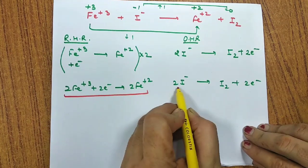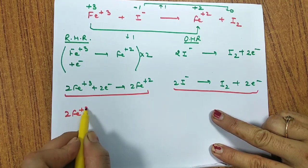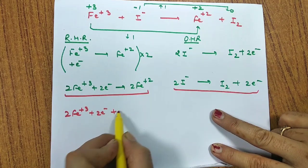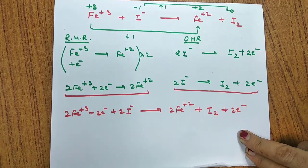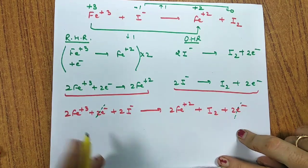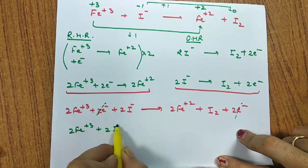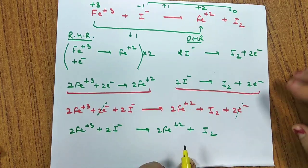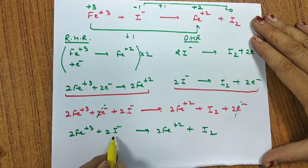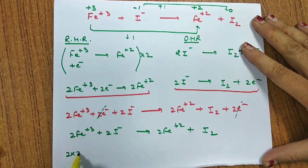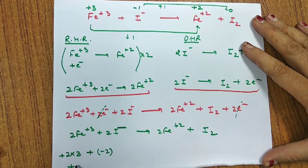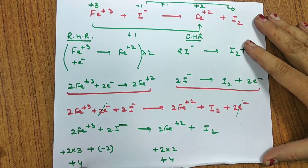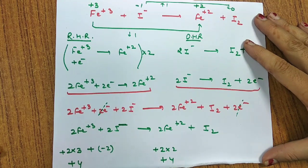Adding the two half reactions together: 2Fe³⁺ + 2e⁻ + 2I⁻ → 2Fe²⁺ + I₂ + 2e⁻. Cancelling the electrons from both sides, the final balanced equation is: 2Fe³⁺ + 2I⁻ → 2Fe²⁺ + I₂. Checking: 2 iron on each side, 2 iodine on each side. Charge: left = +6 - 2 = +4; right = 2×(+2) = +4. The equation is completely balanced.